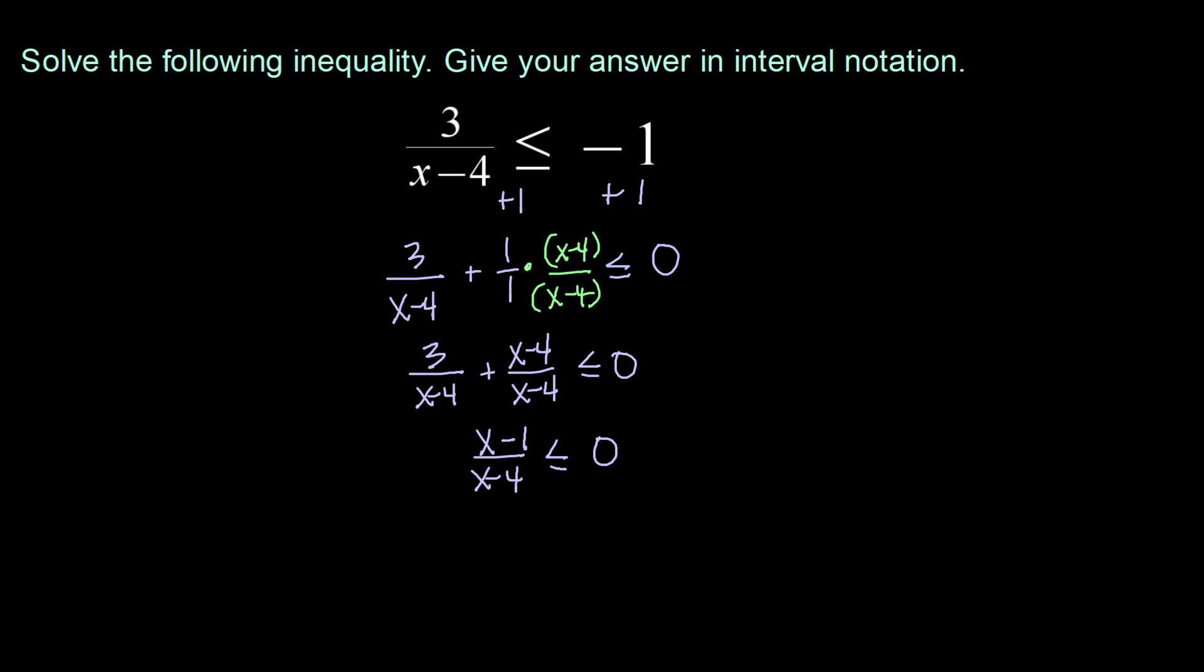Now that I have my rational expression being compared to zero I can list out any excluded values and any zeros. Excluded values we know come from values of x that would make our denominator zero. In this case that would be x equals four. And zeros come from any values that would make our numerators be zero. So in this case x minus one gives me a zero of x equals one.